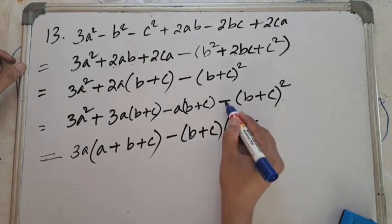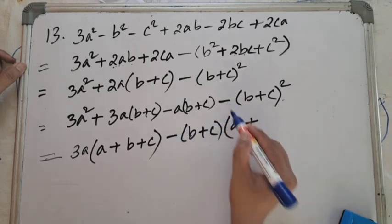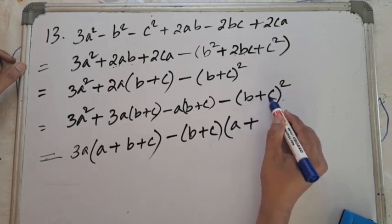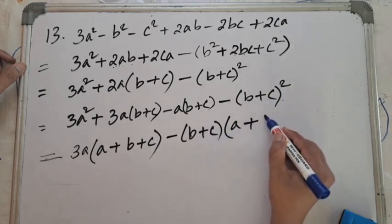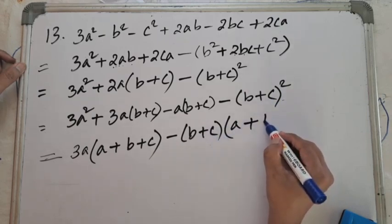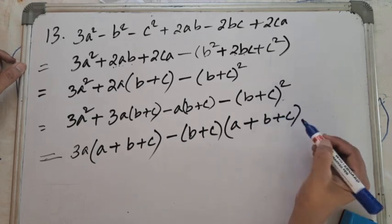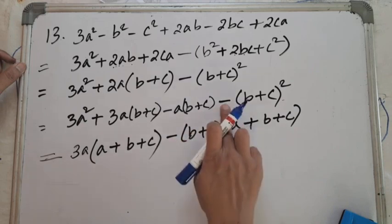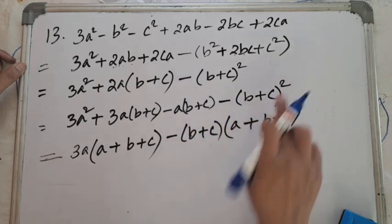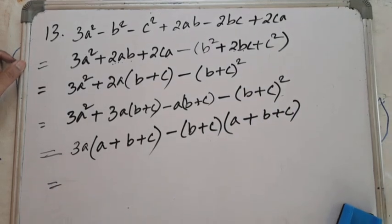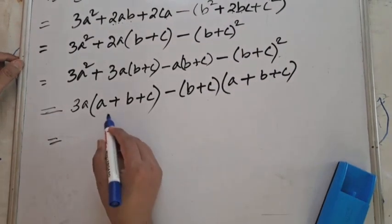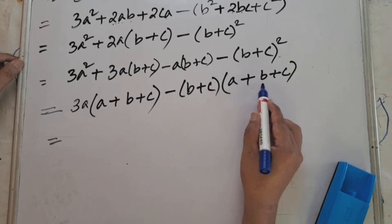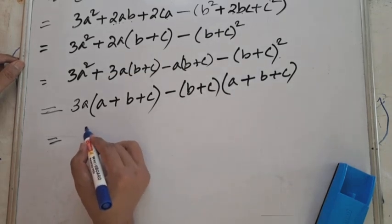So we have 3a[a + b + c] - (b+c)[a + b + c]. Now we can take (a + b + c) as common from both terms, since a + b + c appears in both.